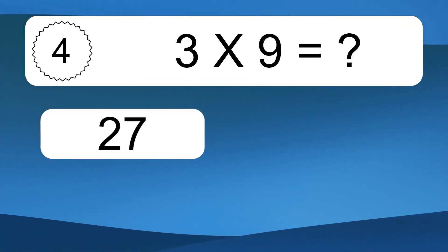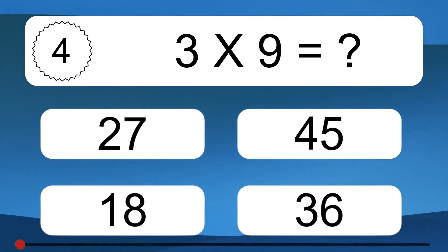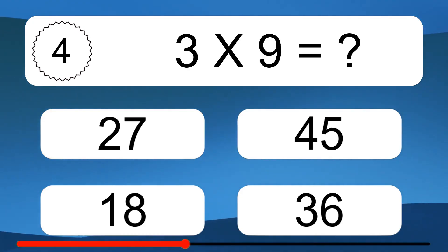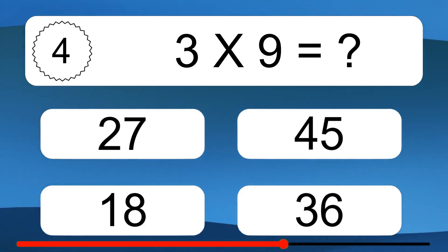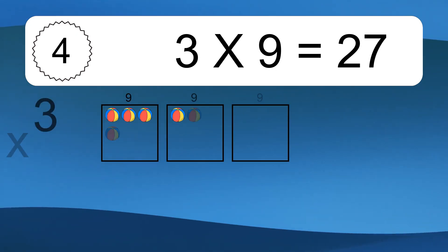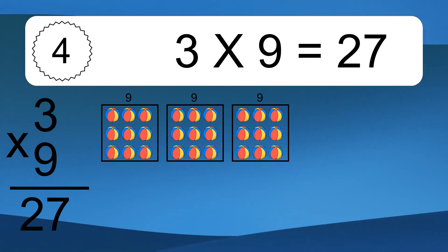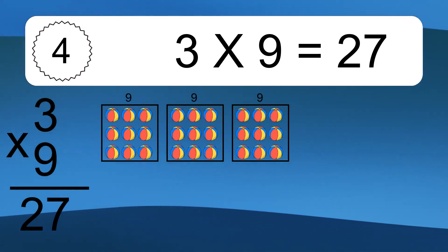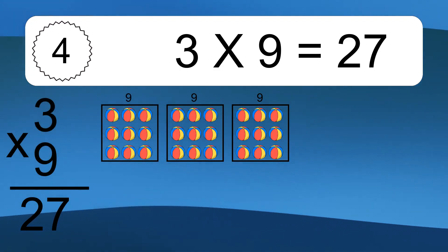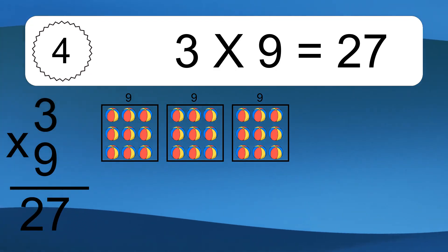3 times 9 equals what? 3 times 9 equals 27. We have 3 boxes, and each box has 9 colorful balls inside. If you count all the balls in all the boxes together, you will have 3 times 9 balls. This equals 27 balls.